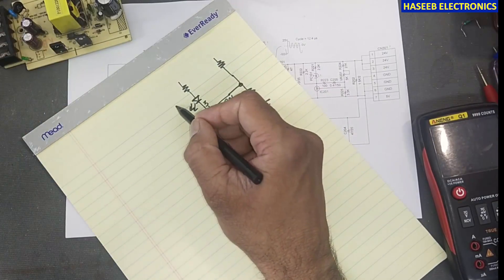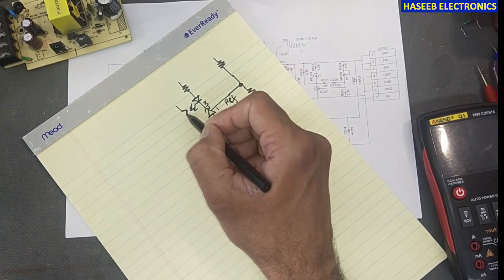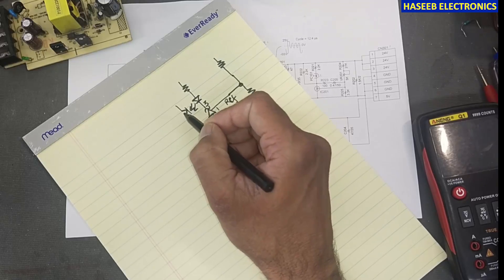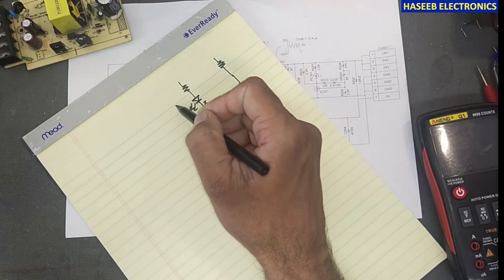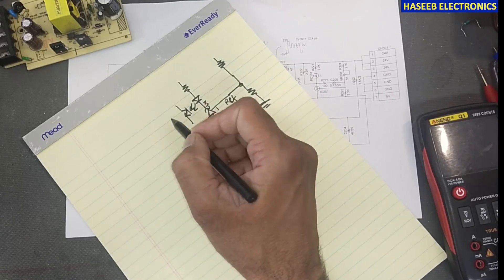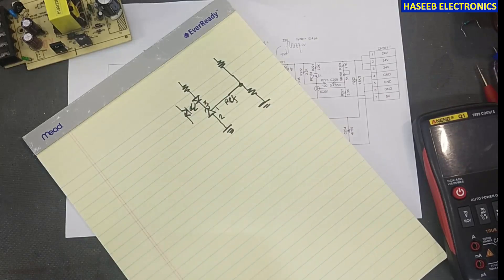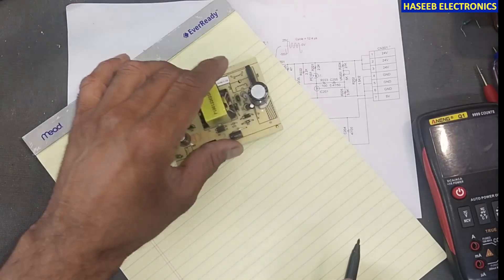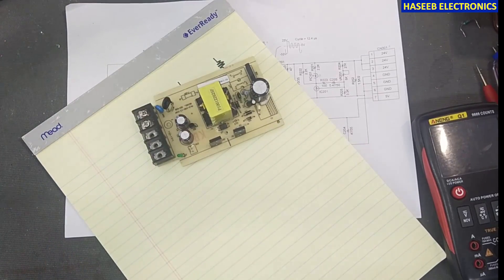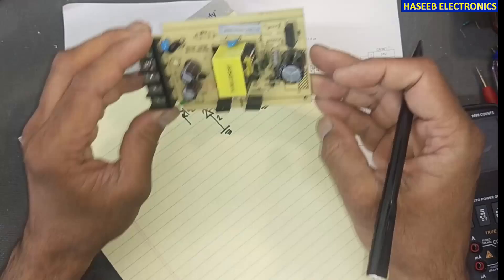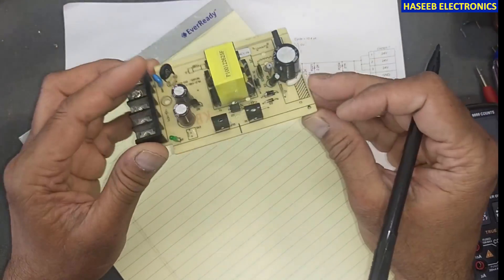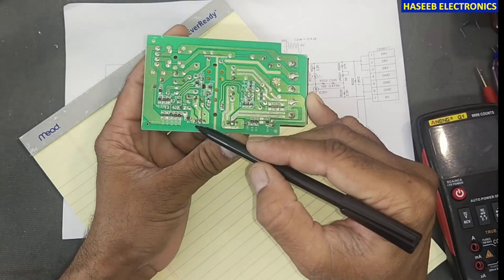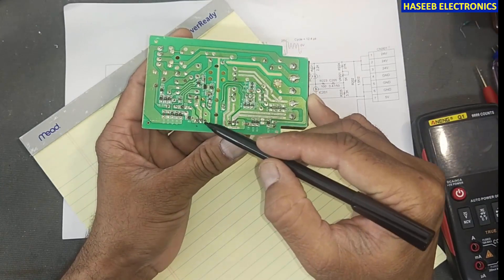That LED is the optocoupler. Its output transistor will switch and it will control the PWM controller. If we have some problem and the voltage has dropped, there are possible reasons we need to check.